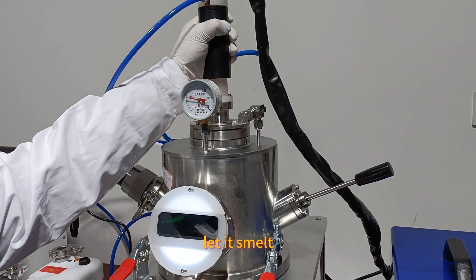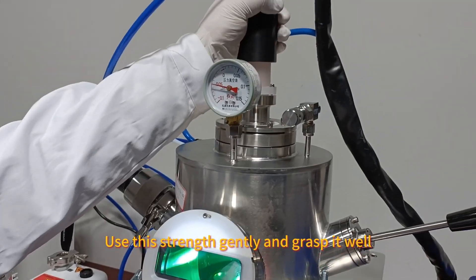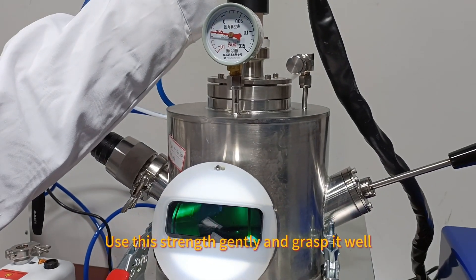Draw circular arc. Let it smelt. Use this strength gently and grasp it well.